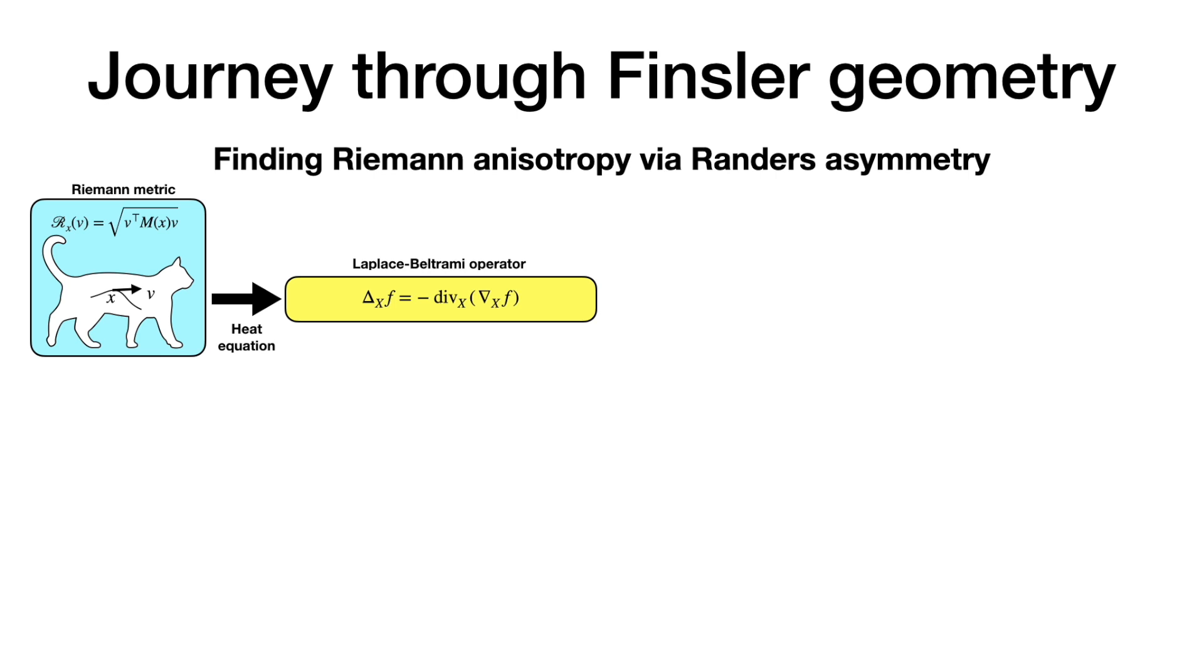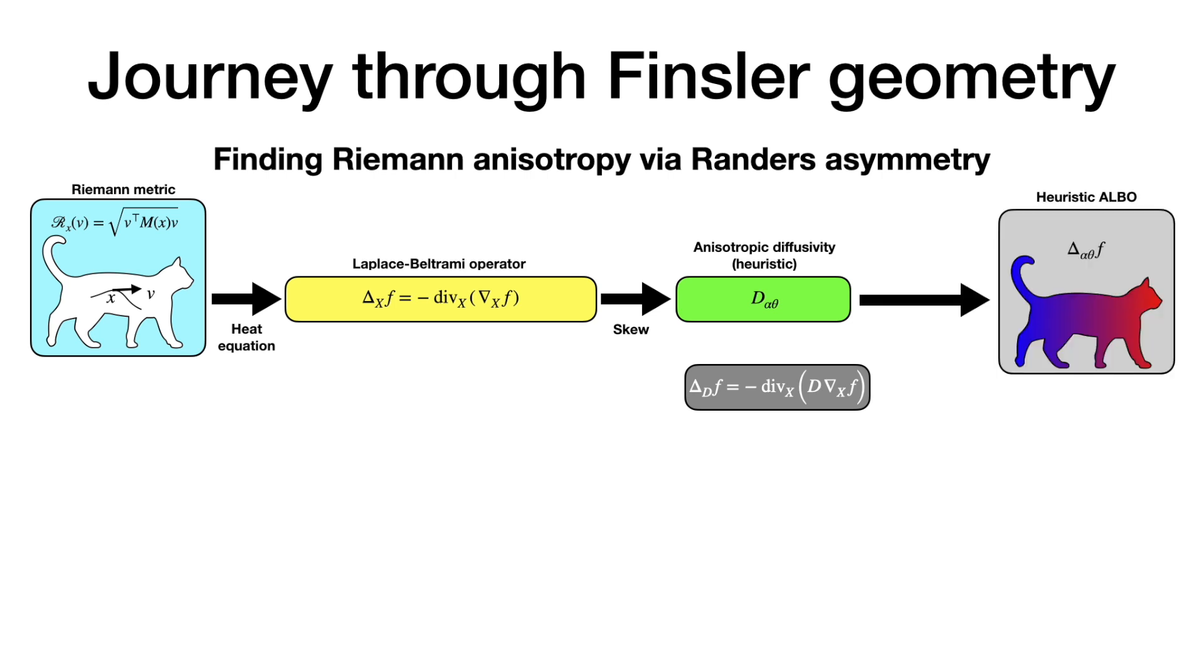To create anisotropy, past work typically skewed the diffusivity of the manifold by introducing a heuristic diffusivity matrix D inside the LBO formula, leading to an anisotropic LBO.